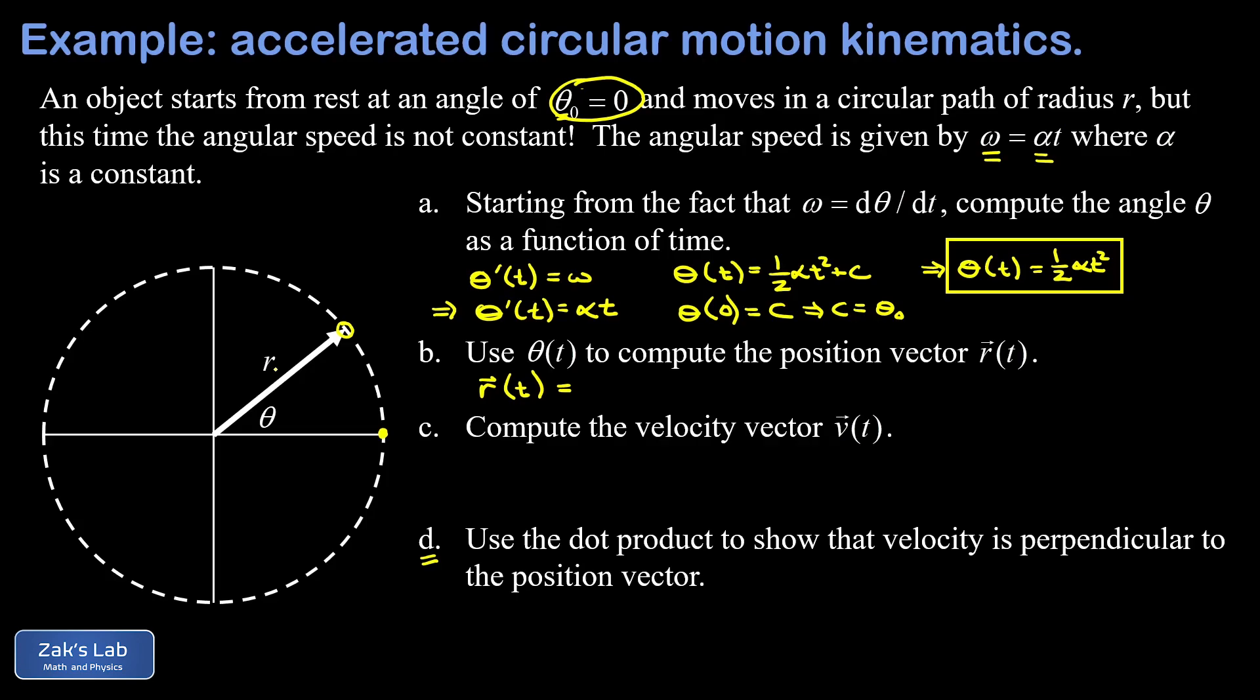That's a vector pointing from the origin to the current location of our object on its circular path. This has a length of r, and it's tilted up at an angle of theta, which means the x component is r cosine theta. So I'm going to write r times the cosine of theta, but theta is given as a function of time by one-half alpha t squared. So I have r cosine one-half alpha t squared i hat, and then the other component is r sine one-half alpha t squared j hat.